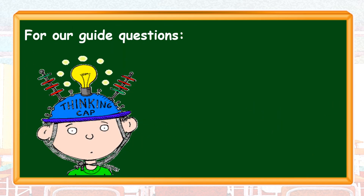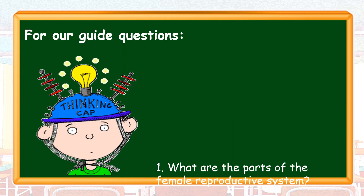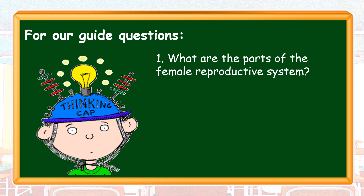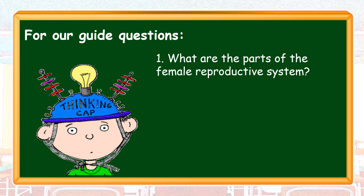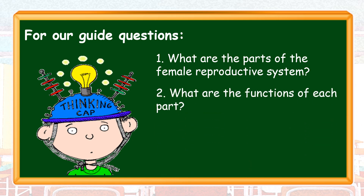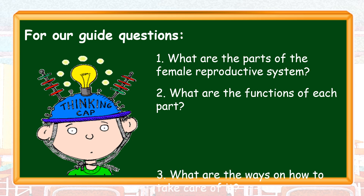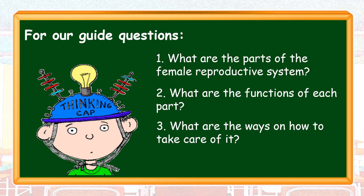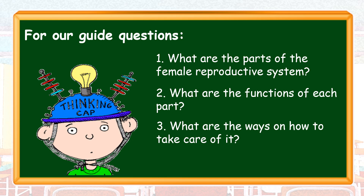For our guide questions: Number 1 - What are the parts of the female reproductive system? Number 2 - What are the functions of each part? And number 3 - What are the ways on how to take care of it?